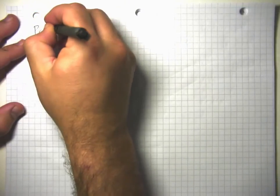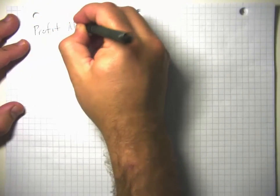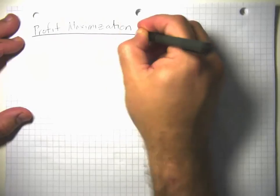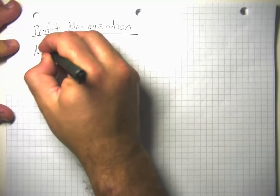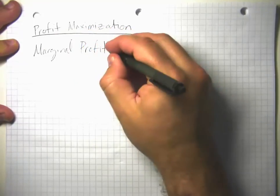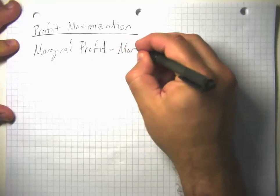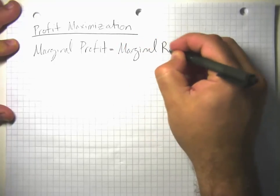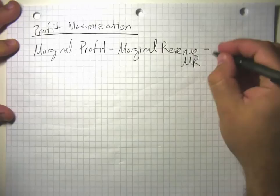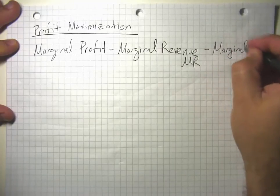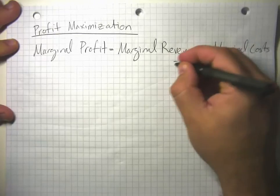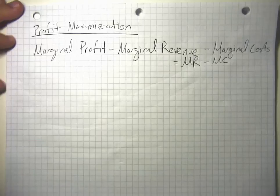Let's go ahead and talk about profit maximization. The marginal profit of producing a unit is how much revenue that unit brings in — marginal revenue, which we can abbreviate MR — minus how much producing or selling that unit adds to costs, which is marginal costs. So marginal profit equals marginal revenue minus marginal costs.